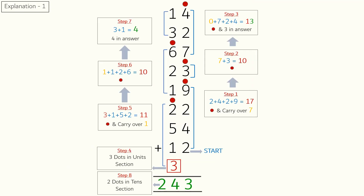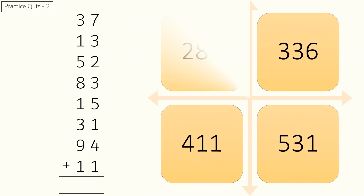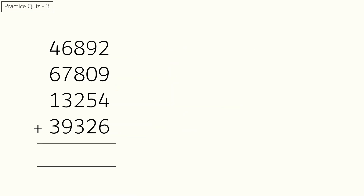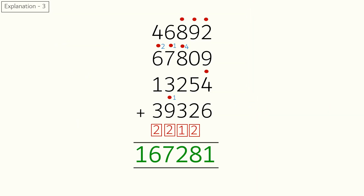Here's the answer and explanation for Quiz 1. Quiz 2: add these numbers using the Drop 10 method and choose your answer from these options. Here's the answer and explanation for Quiz 2. Quiz 3: find the answer for the following addition. This is the answer and explanation for Quiz 3.